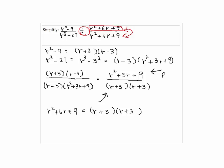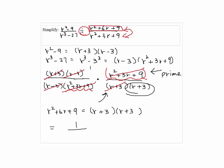r squared plus 3r plus 9 is a prime, so we cannot factor this. Now we are ready to cancel. Notice that we have r plus 3 on top and bottom, and r squared plus 3r plus 9 also appears on top and bottom, so we can cancel that term. And r minus 3 as well. We are left with r plus 3 on the bottom and 1 on top, so the answer is 1 over r plus 3.